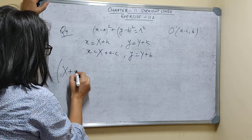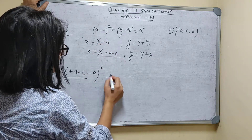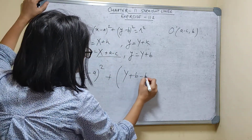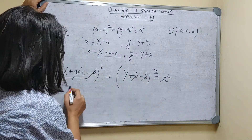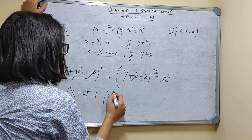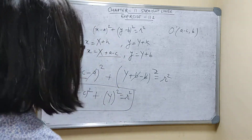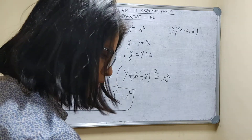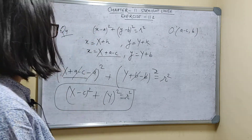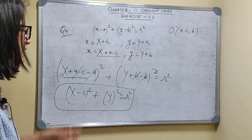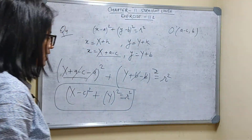Substituting at the place of X: (X + A - C) - A, whole squared, plus at the place of Y: (Y + B) - B, whole squared = R². The A's cancel and B's cancel, giving (X - C)² + Y² = R². That is the new equation when origin is shifted to (A - C, B).